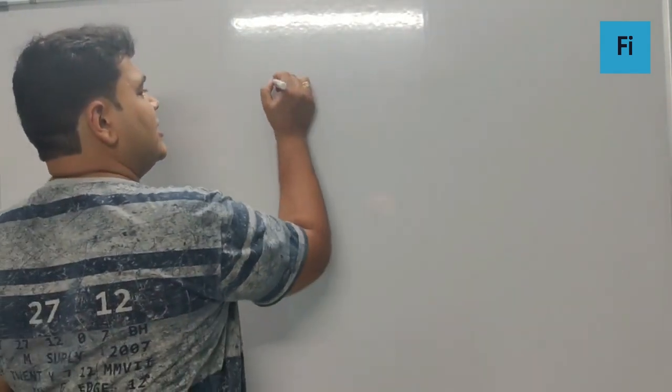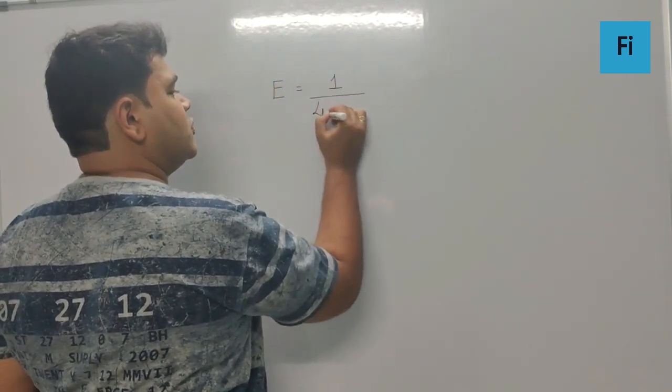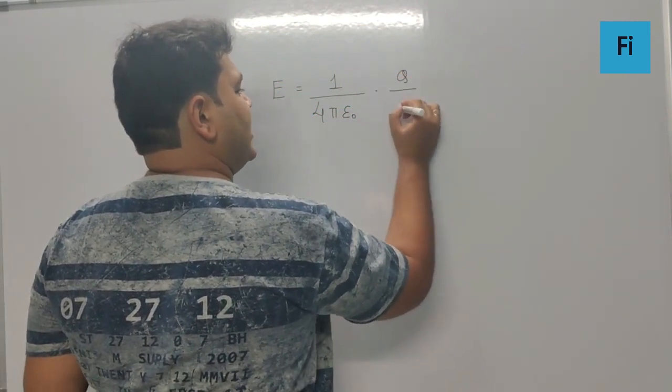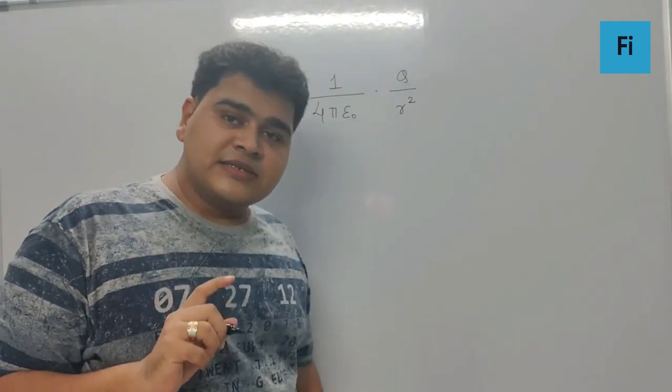So we want the electric field intensity for which the formula is 1 upon 4 pi epsilon naught into q by r square. But please remember the r is the distance of the point from the center of the sphere where we want to find the electric field.